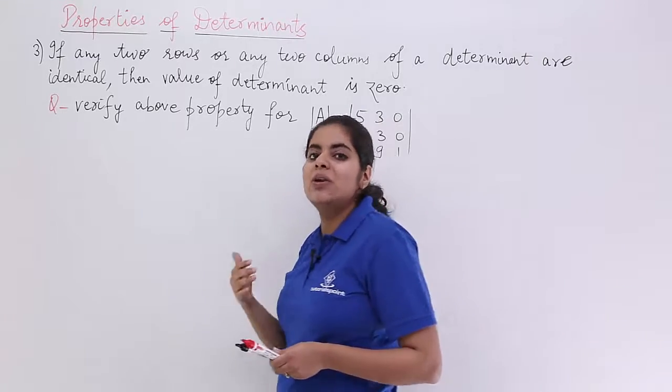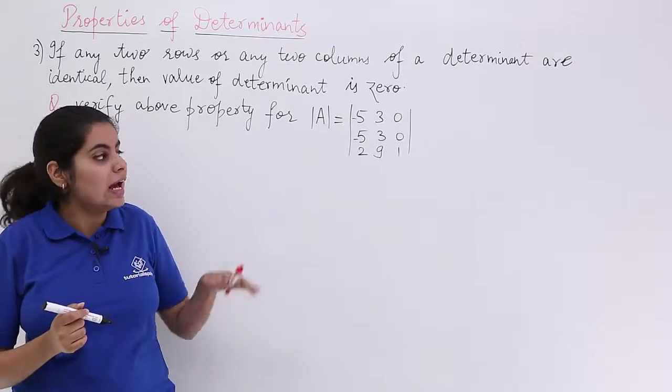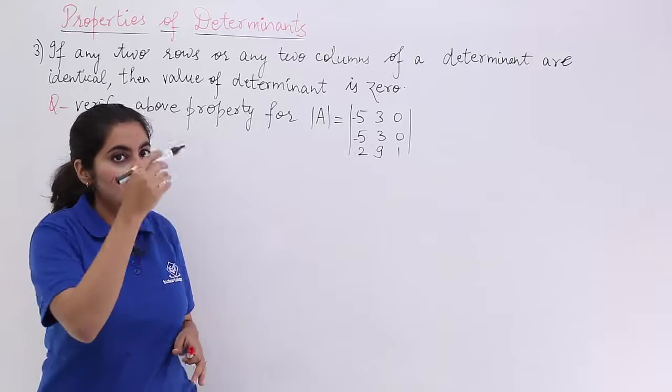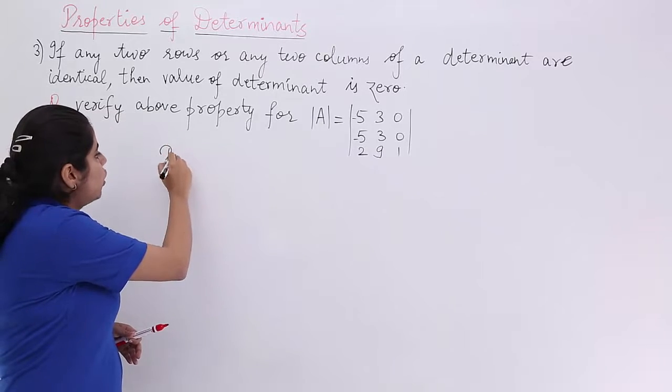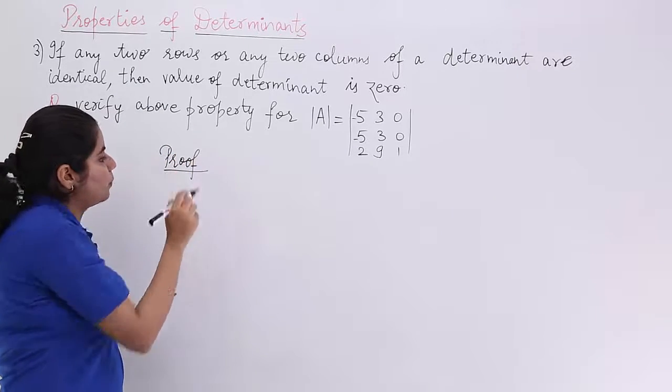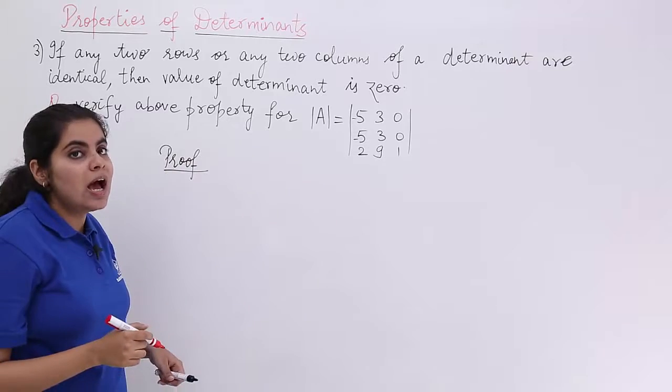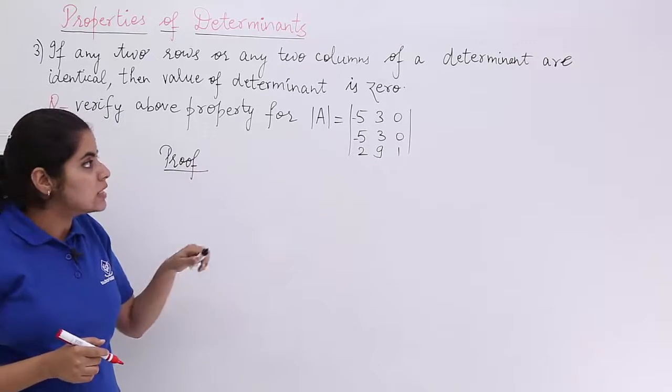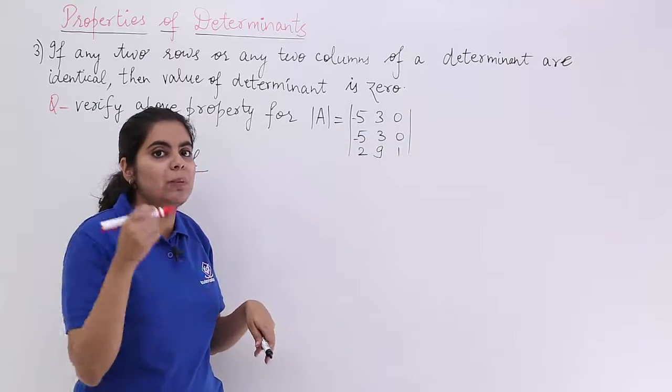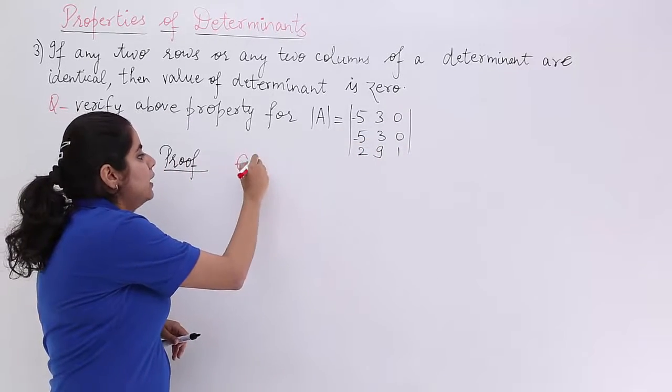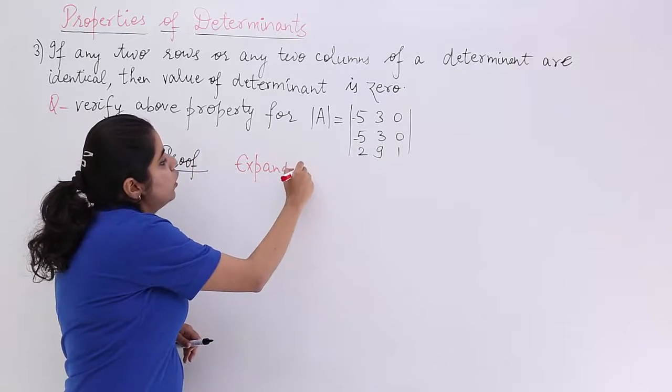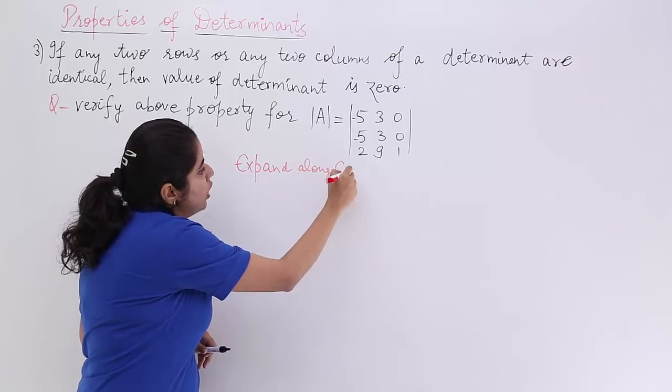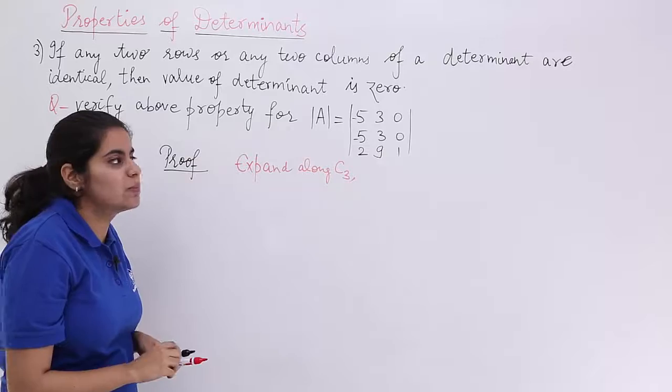But we have to prove it. So let's first solve it and then say that it is equal to 0. So I have the solution or the proof to this property and the problem. I expand along any row or any column. Since it is simpler to expand with maximum number of 0s, let's expand along the column 3 wherein we have maximum 0s.